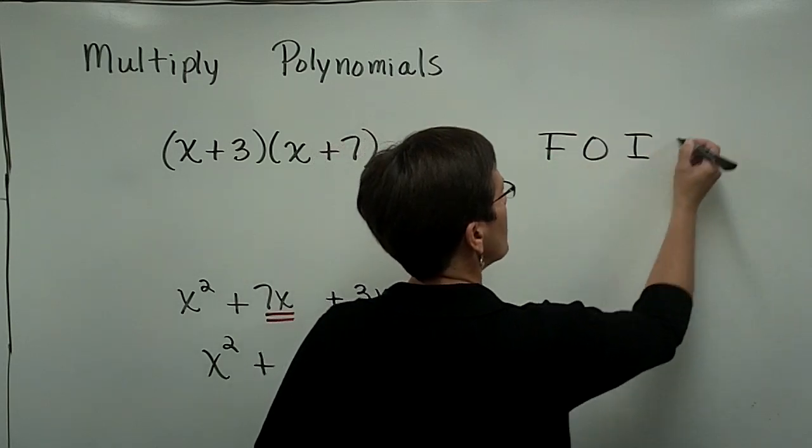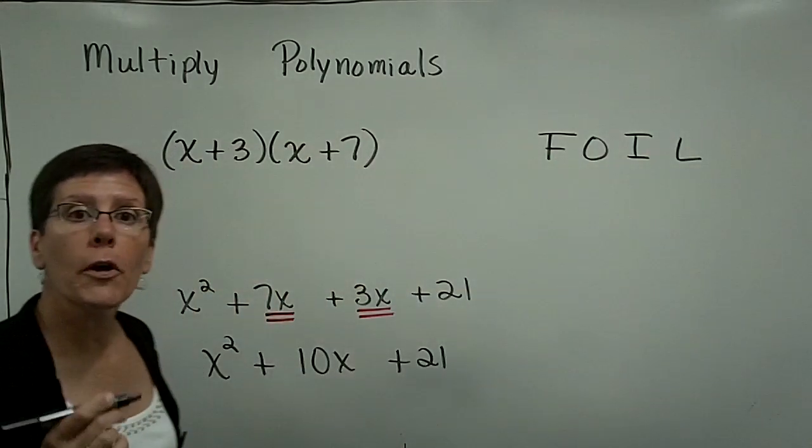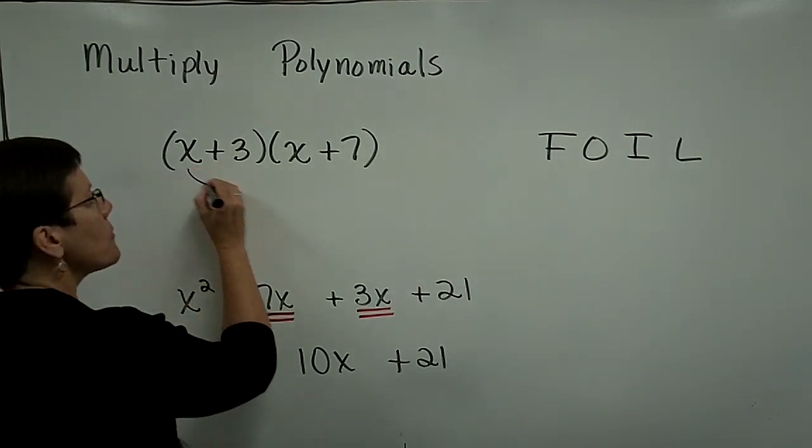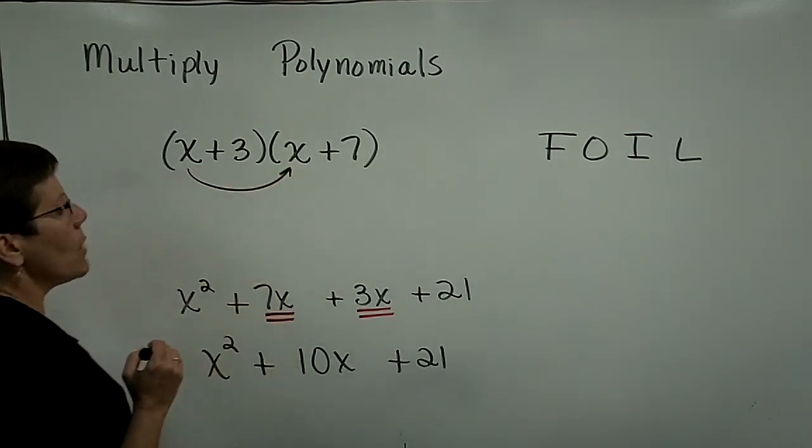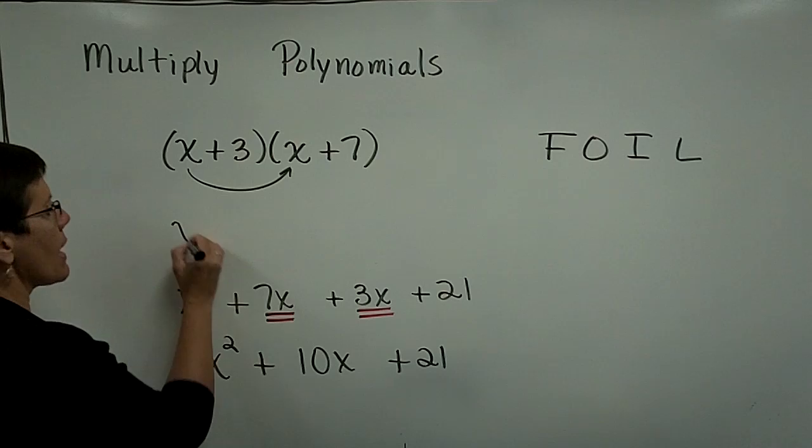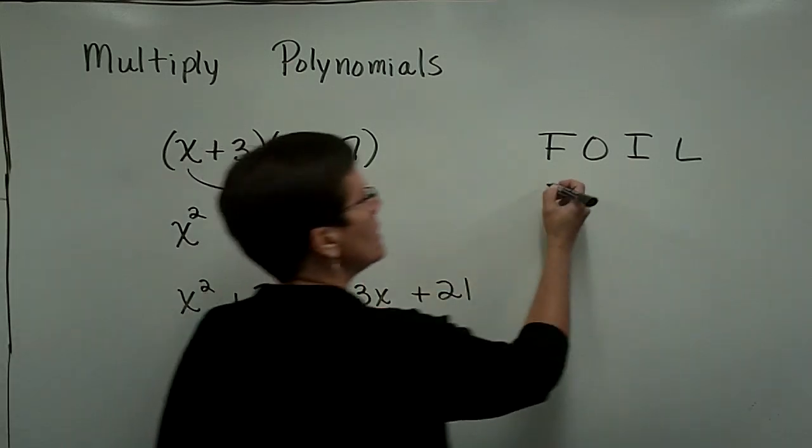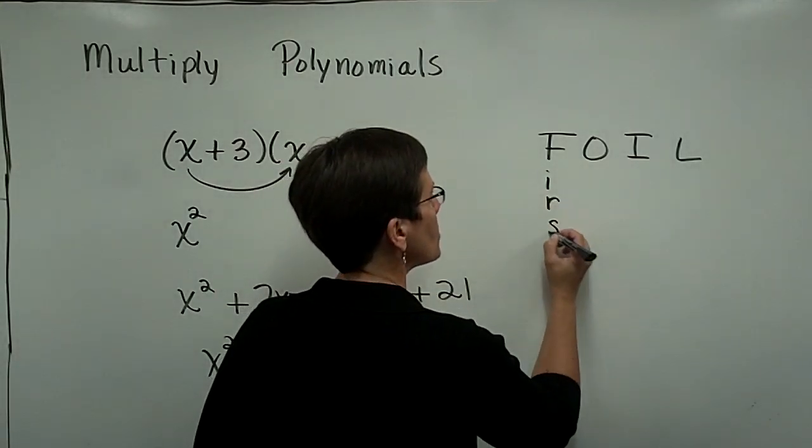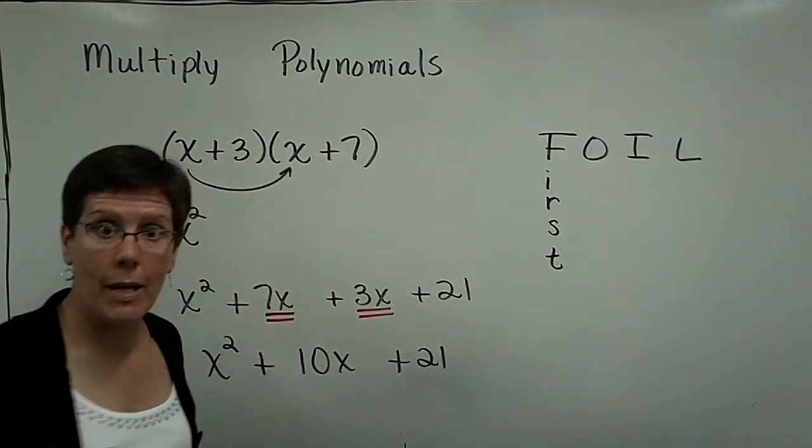And this is how you spell FOIL. FOIL means to take the first terms and multiply them together. x times x is x squared. So the first terms get multiplied together.